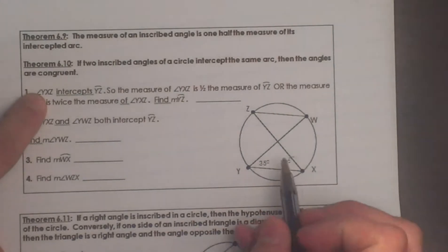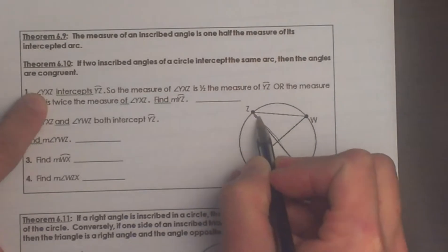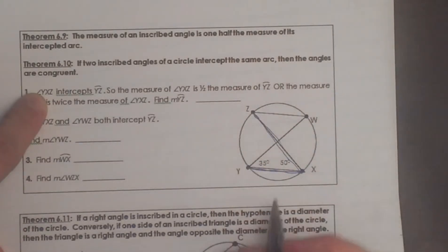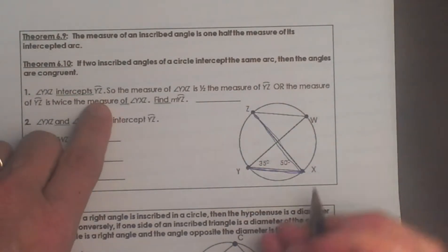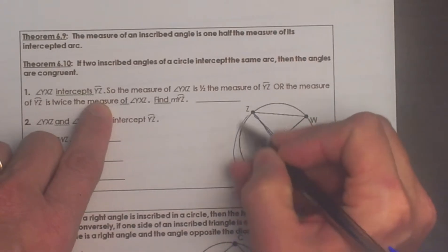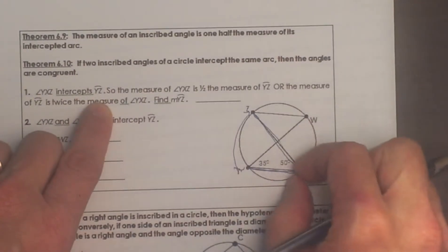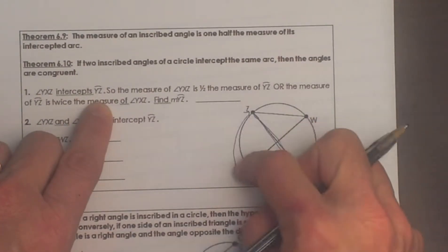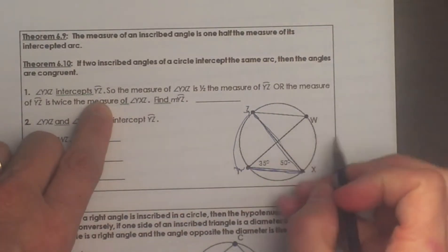First we are going to look at the angle y, x, z. So this is the angle. Notice I am darkening it to help see it. They intercept this arc. When we say intercept it means what arc is cut off in the circle. So this angle back here is 50 degrees. That is given to us.